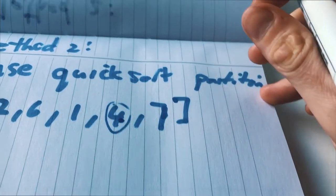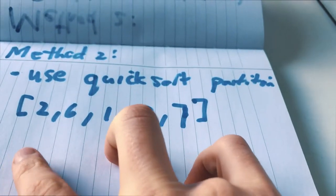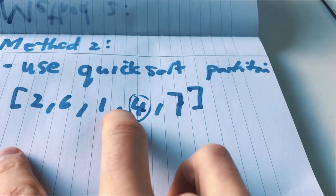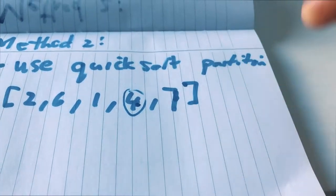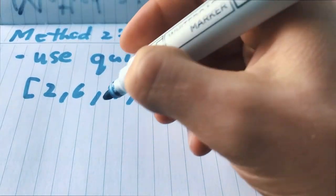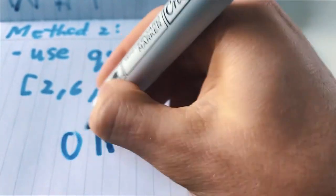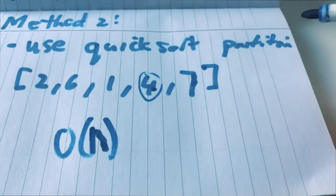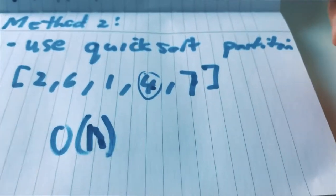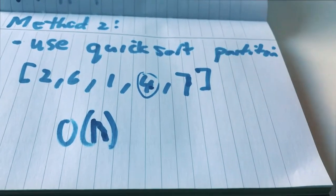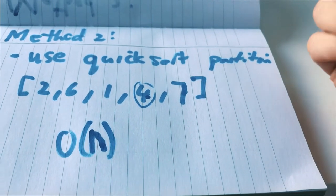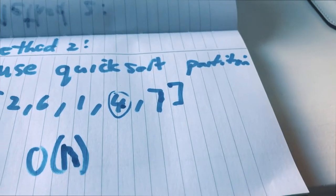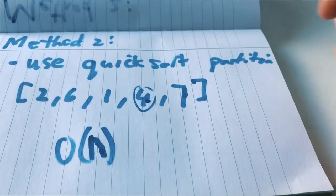If that element is bigger than k, that means we only need to call partition on the left half of the array, and if it's smaller we call it on the right. So this method in total ends up being O(n), which is obviously better than O(n log n) like the previous sorting method. But obviously the sorting method is a lot easier to implement because you could just say arrays.sort.